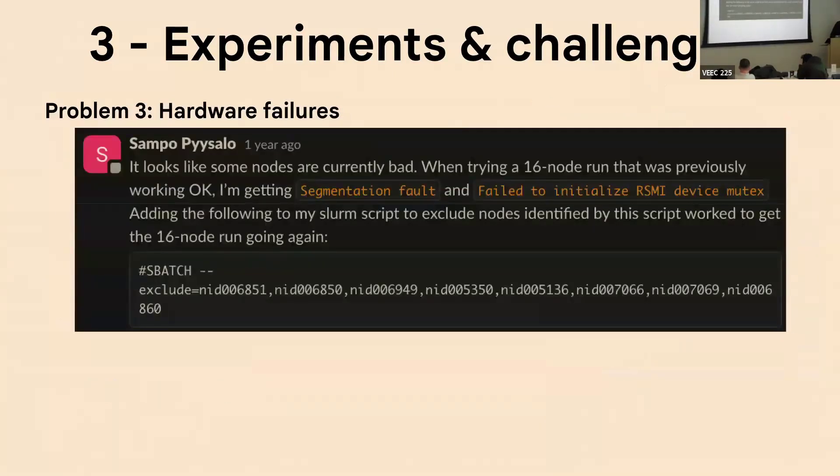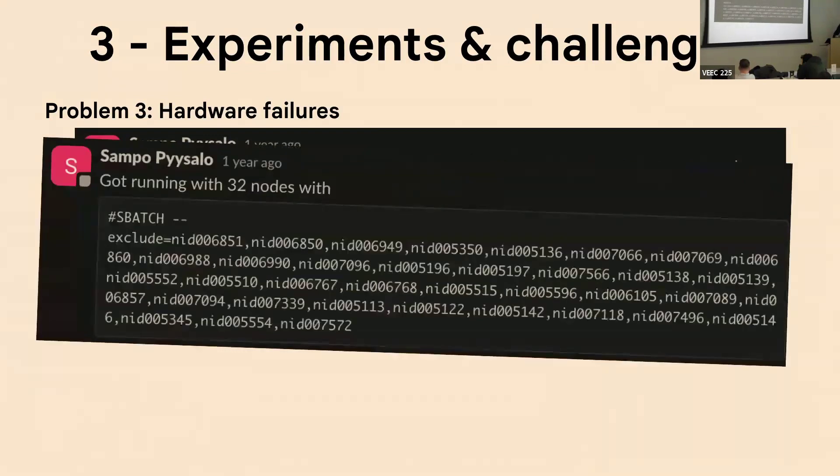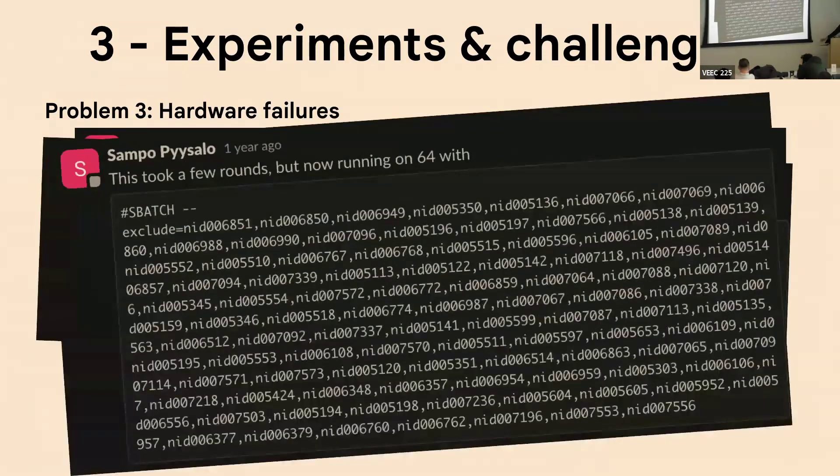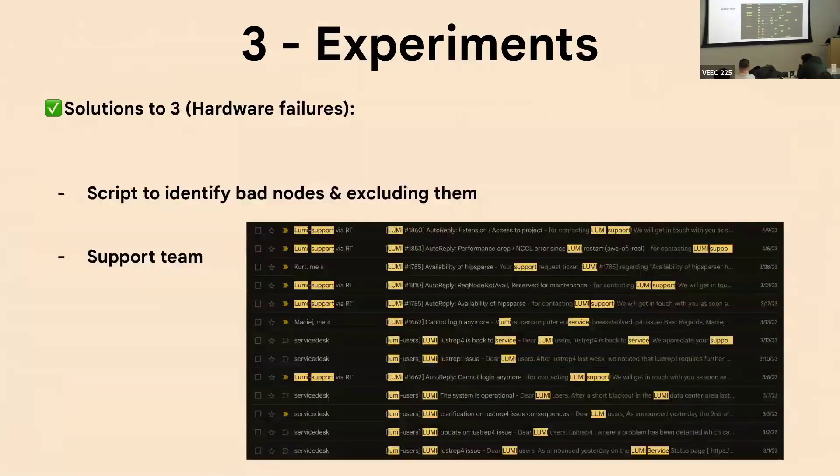And the third big problem we faced were hardware failures. Especially with AMD GPUs, they aren't as mature yet. So we had lots of problems with those nodes. And the best solution we found is just excluding them. Eventually it got a bit out of hand and we started to exclude like half of the cluster. But that's pretty much the best solution you can go with here. Just have a good script to identify the bad nodes and then exclude them. I also spammed the support team, but that didn't always help.